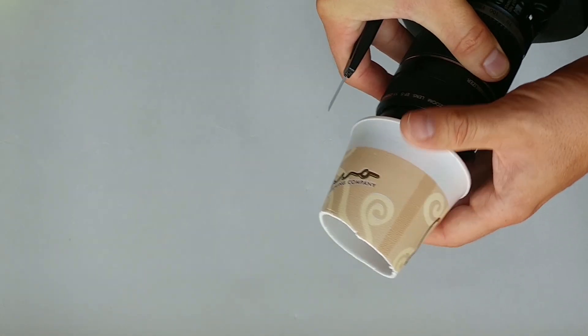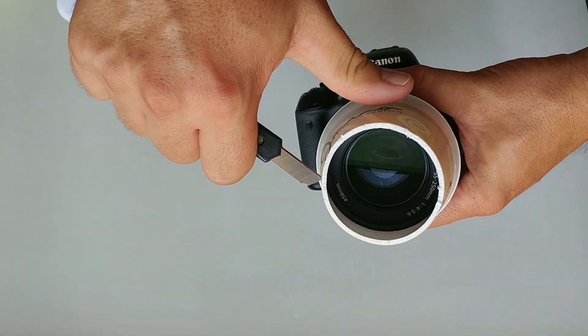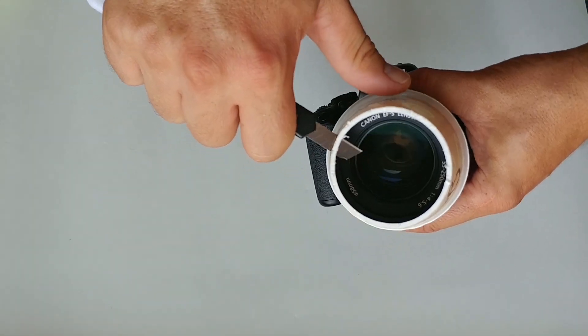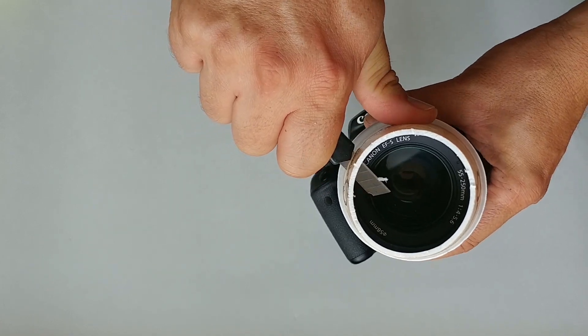First, I cut the bottom of the cup so I can see through it. Be careful when you're doing this because you don't want to cut your fingers or scratch the lens.